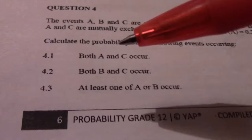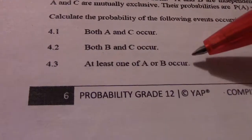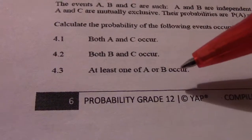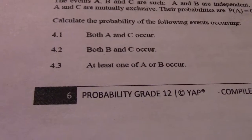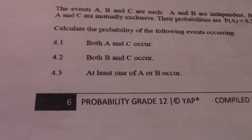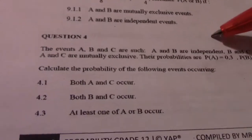And then we come to the third question. At least one of A or B occurs, so I'm looking for probability of A or B, which equals probability of A plus probability of B minus probability A and B. Now remember A and B are independent.